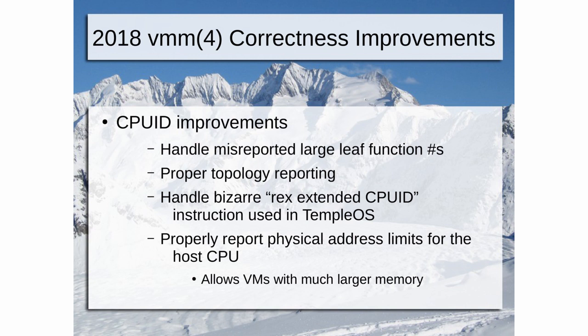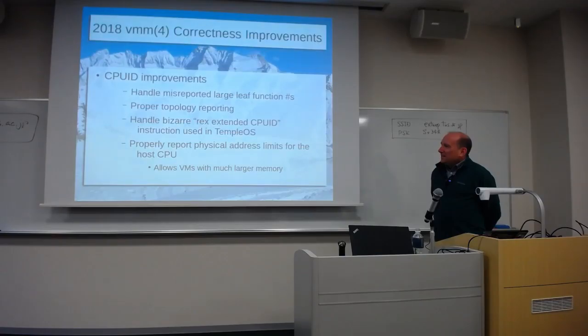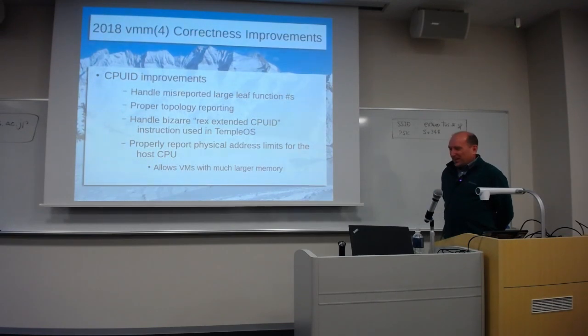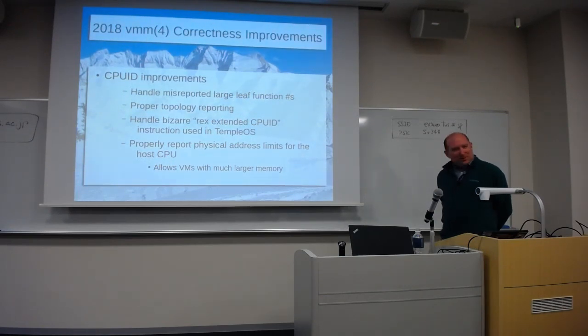This is a bizarre one: CPU ID is a function that always operates on 32-bit values — it takes a 32-bit input and gives 32-bit outputs. But Temple OS uses an instruction size extension prefix on CPU ID, which is really weird. That was causing a crash because it would report back that the CPU ID instruction length was not what we were expecting. We're finally getting to the point where the platform is stable enough that we can start cleaning up these bizarre corner cases. Temple OS still does not work, by the way.